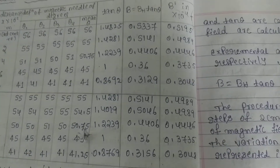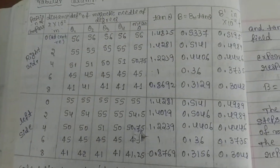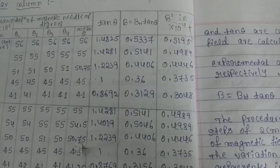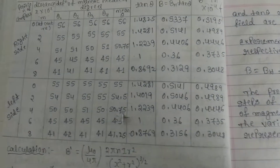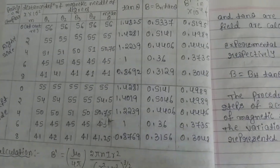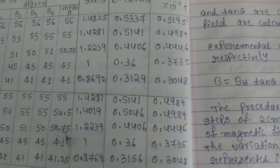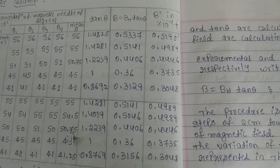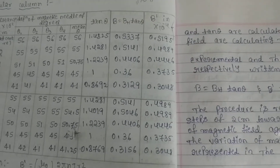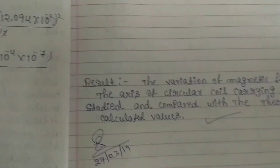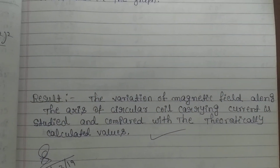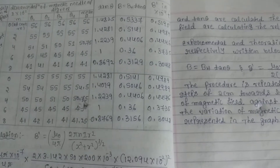After calculating all those values for each set of deflections, you compare the values of B and B dash for each different distance. You can easily conclude that if the values of B and B dash are comparatively the same — if those two are nearly equal — then you can say that the verification of magnetic field along the axis of a circular coil carrying current is done, compared with the theoretically calculated values.